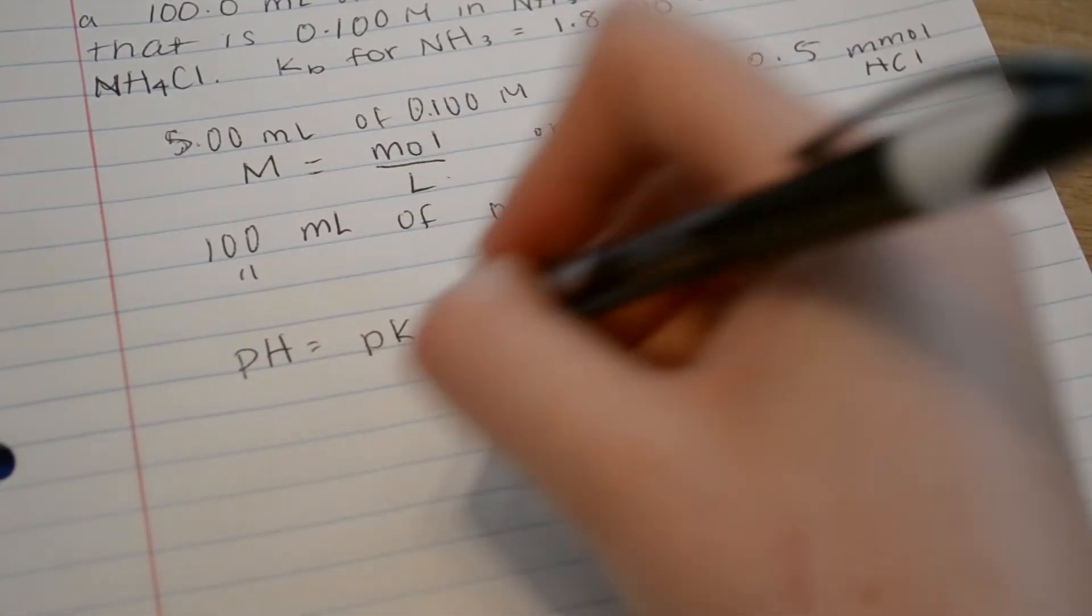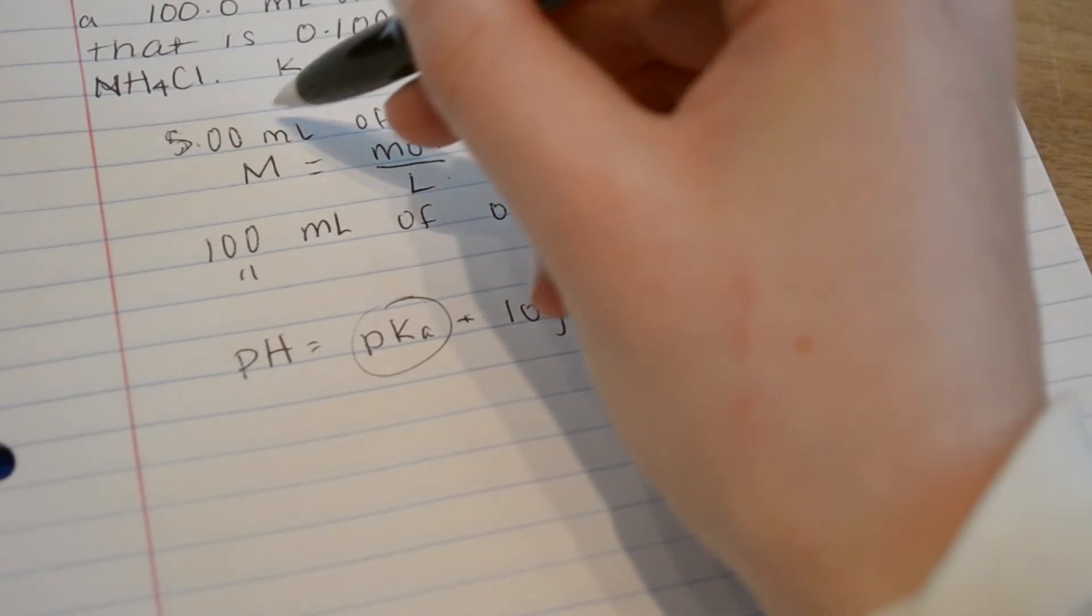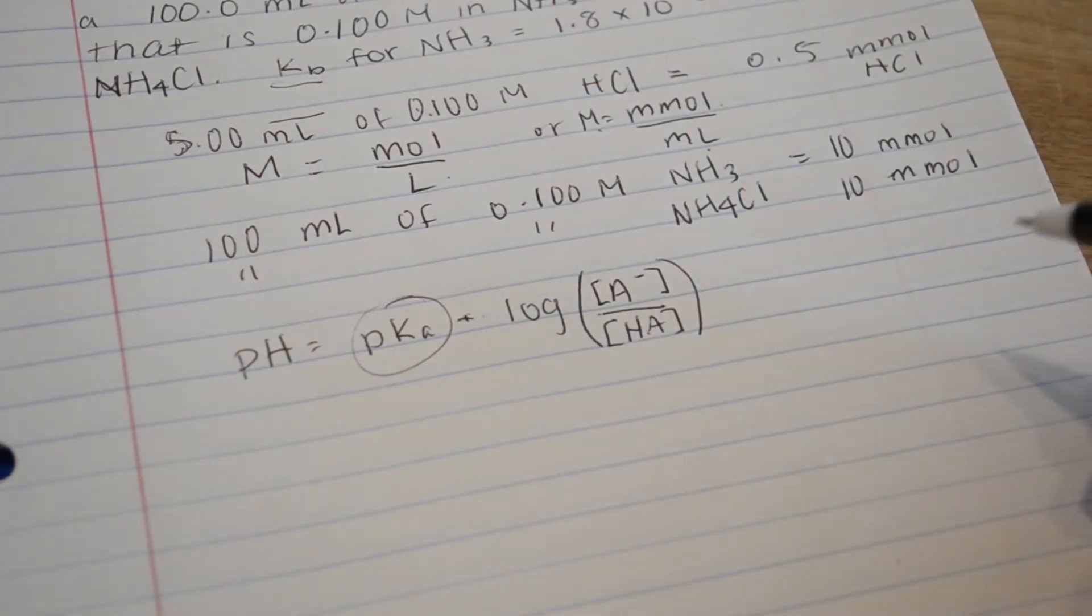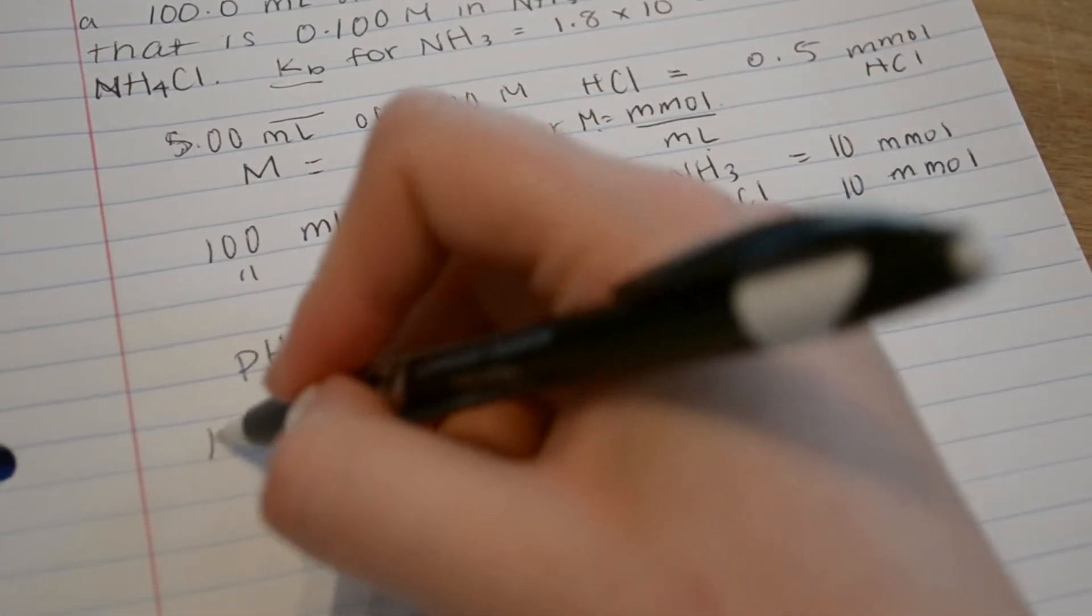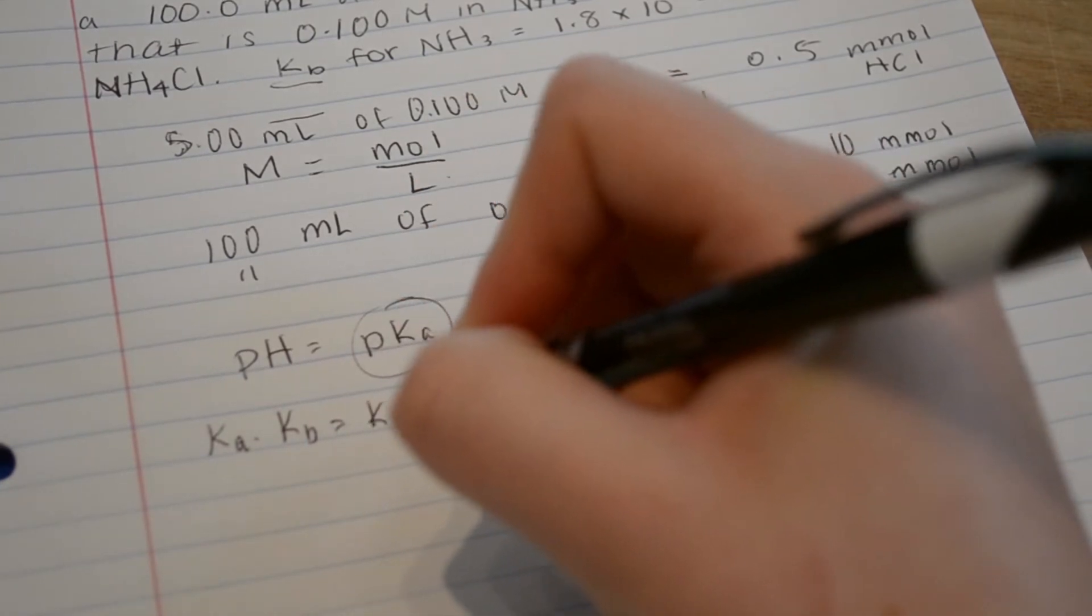So first we need to find pKa and we're given KB. To find pKa, we first need to find KA. KA times KB equals KW.